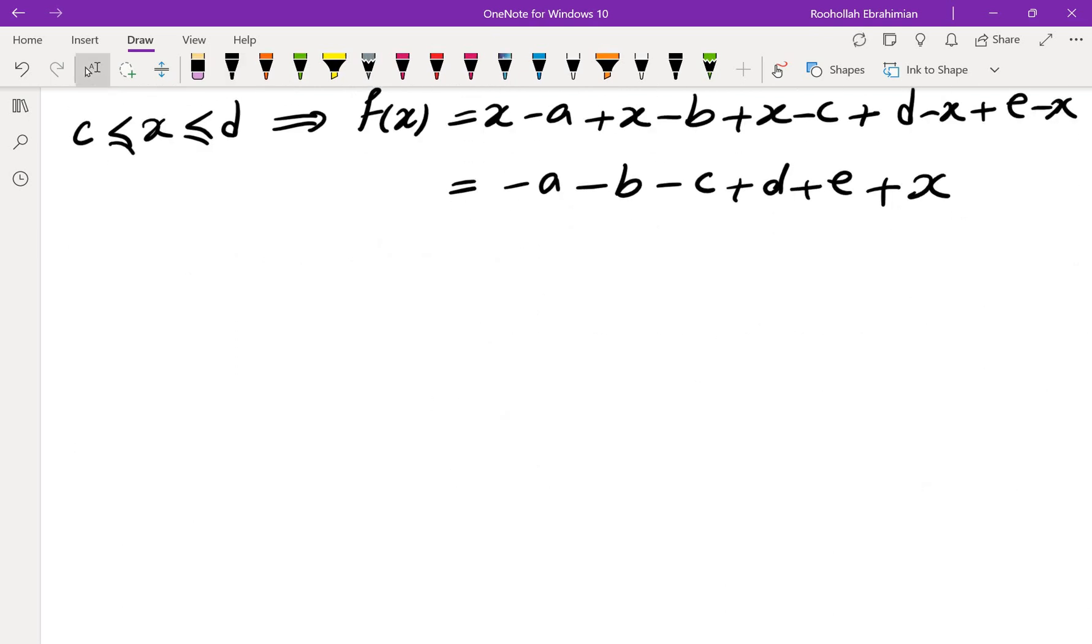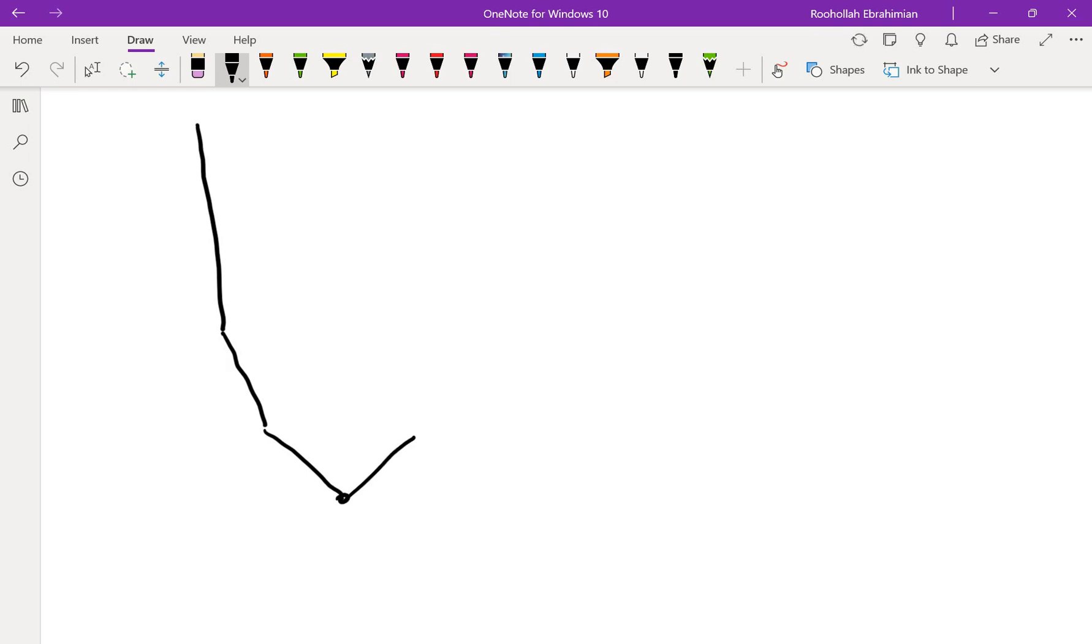So that means, if I look at the graph of this function, in the beginning, the slope is negative 5, then it becomes negative 3, then it becomes negative 1, and then it becomes positive 1. And then it goes back up to 3 and 5,